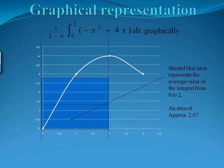The average value is going to be represented by a rectangle, where the width of that rectangle is the length of the curve, and the height is the average value of the function. Notice that the area of our rectangle would be 2 times 2.67.